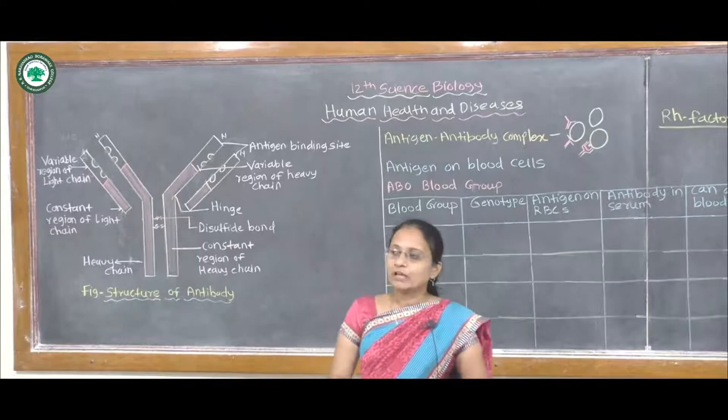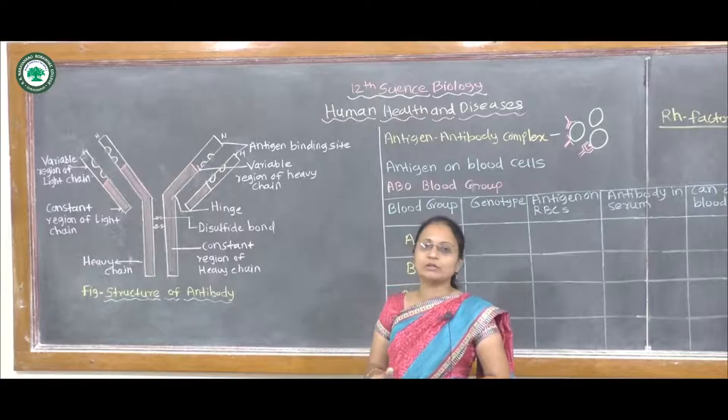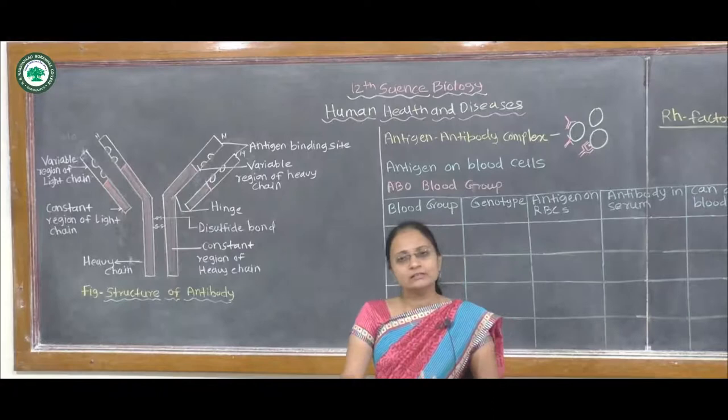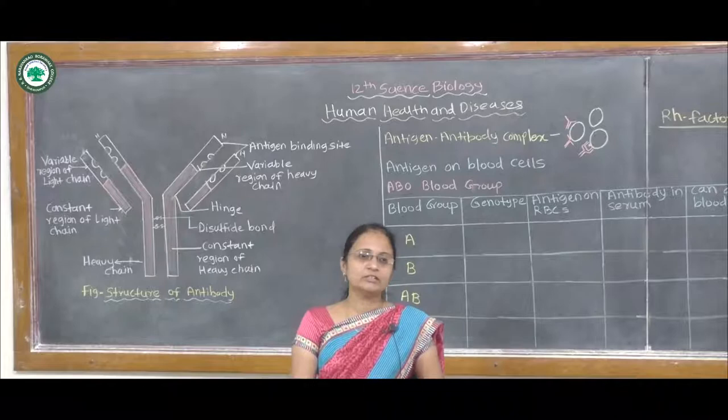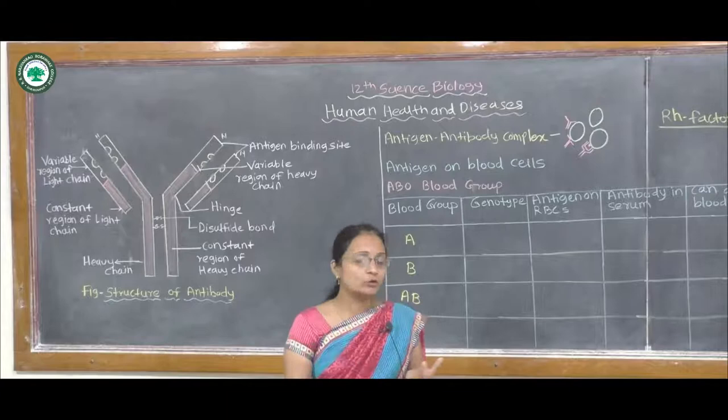Above the surface of both chains, the antigen binding sites are present. These antigen binding sites are specific for specific antibodies. The lock and key mechanism takes place here — just like enzyme-substrate complex formation — the antibodies have a specific type of antigen, and that specific antibody gets attached to the particular antigen binding site. When they combine, they form the antigen-antibody complex.